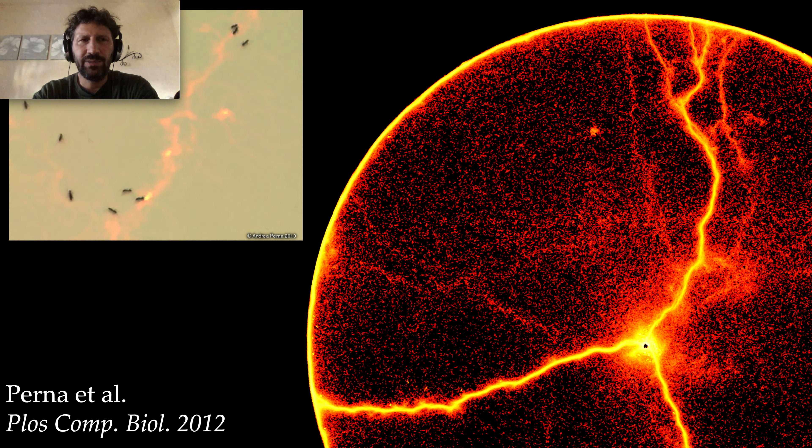This means that a pattern is formed like the one you can see on the right of the slide. Again, this pattern also has function and value: this is the way the colony explores the environment, and depending on this pattern, the colony will or will not find food, for instance.